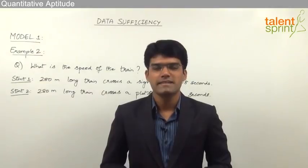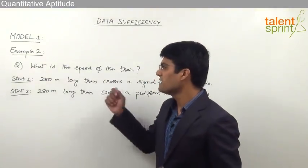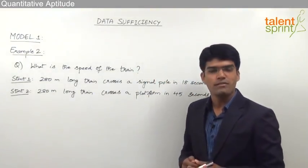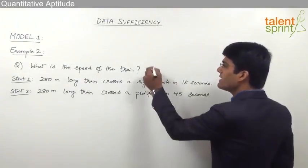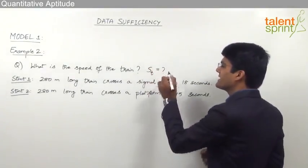Let us now take the second example from model 1. The question here is: what is the speed of the train? So we simply have to find out the speed of the train. Let us take it as st.